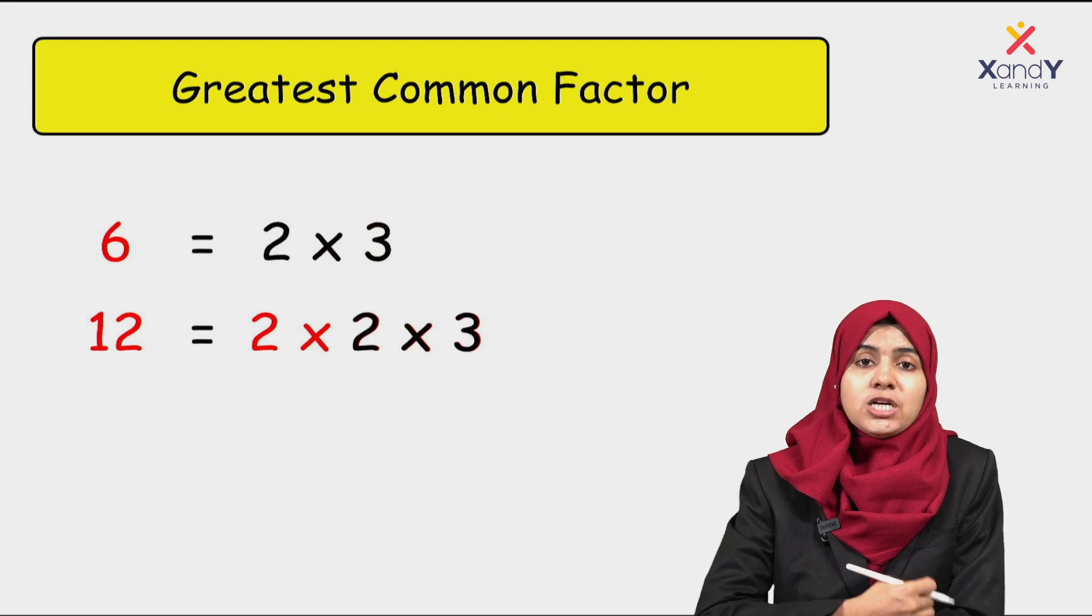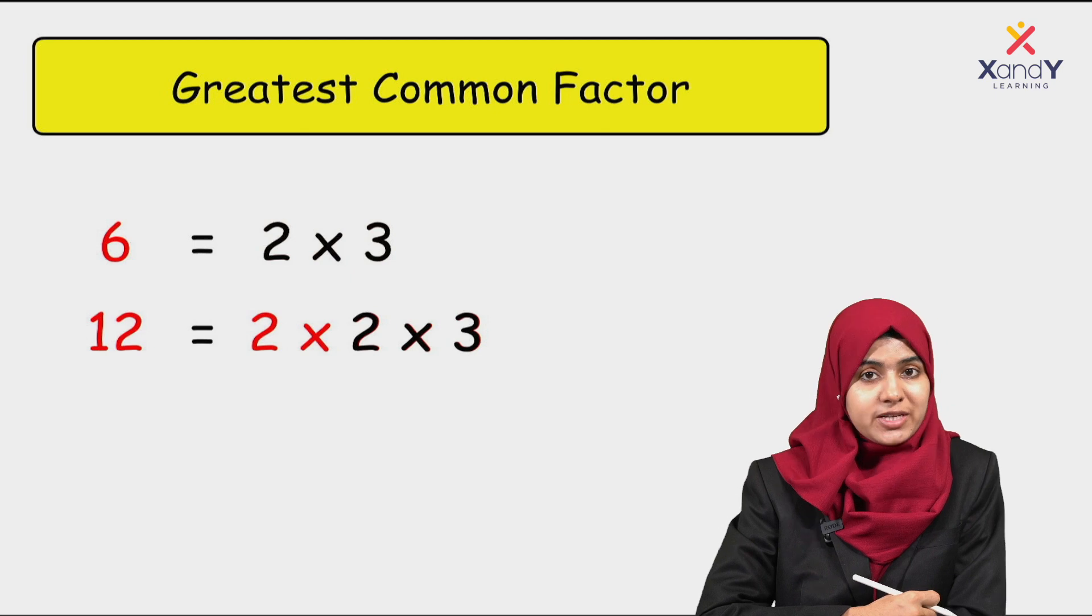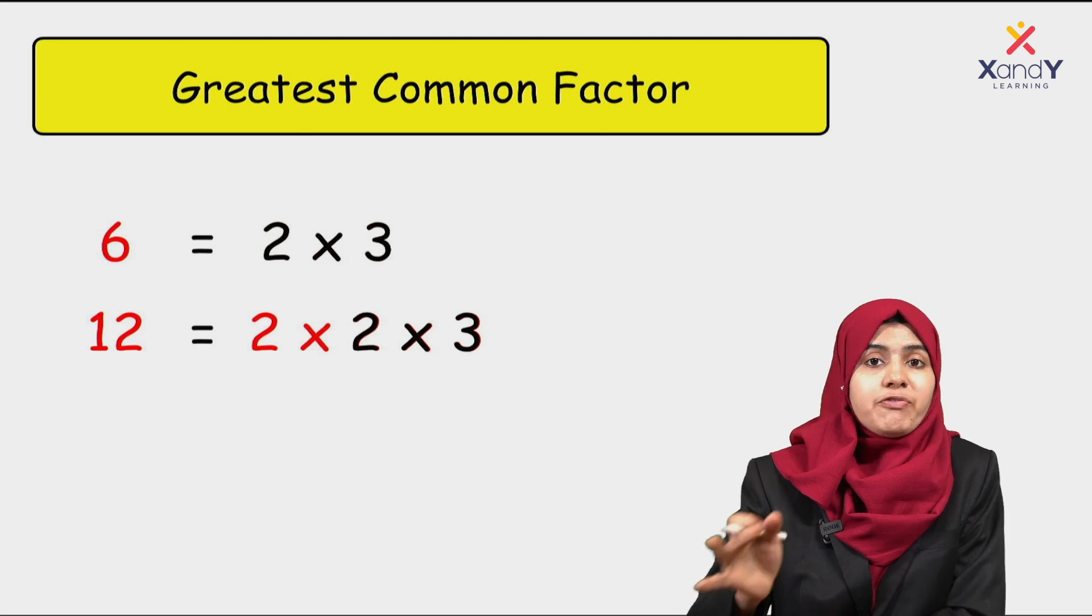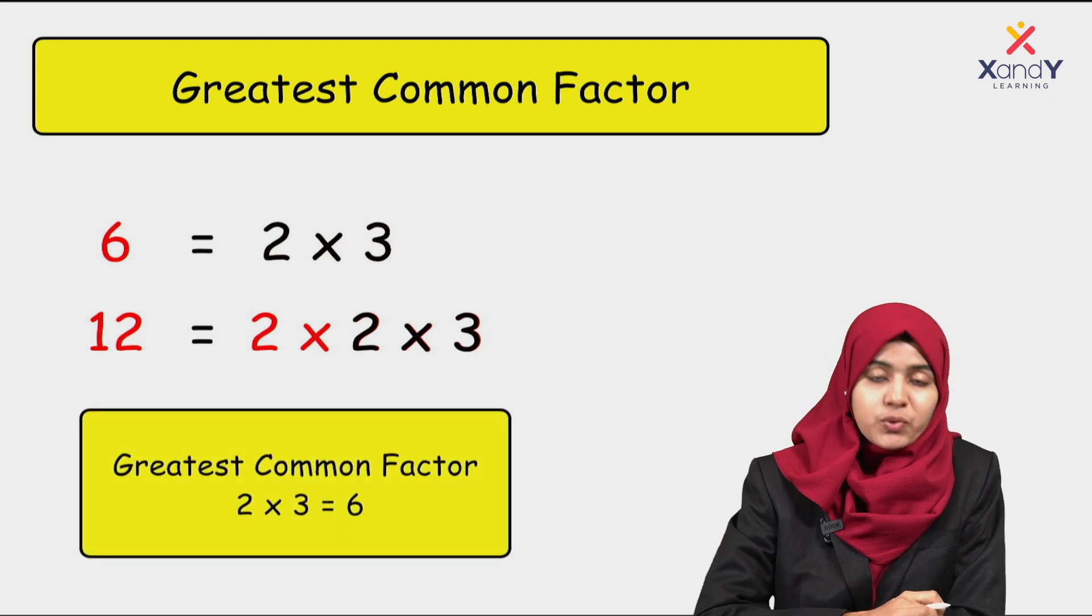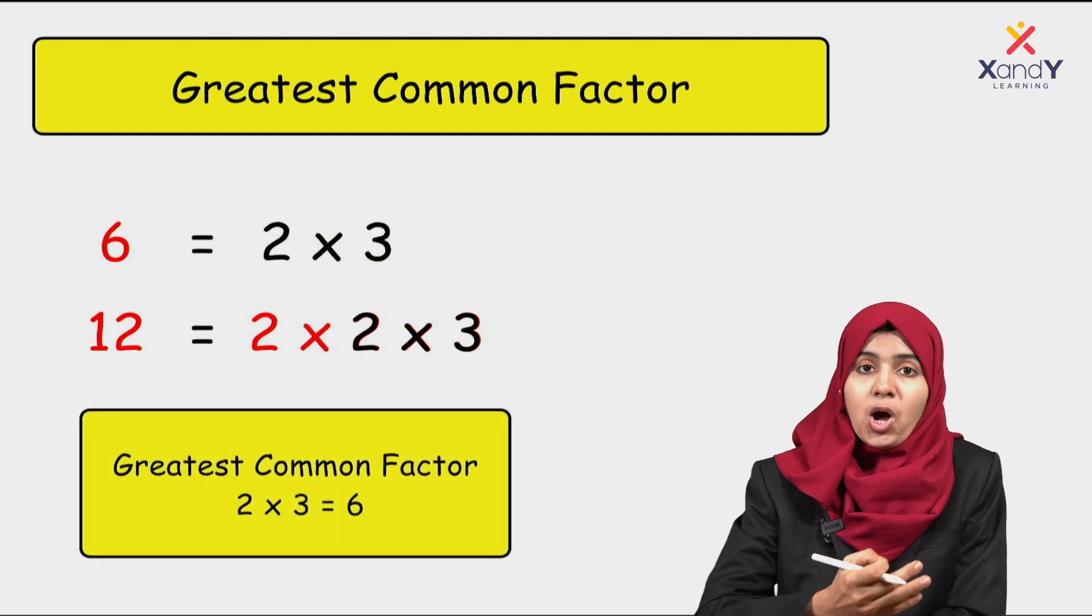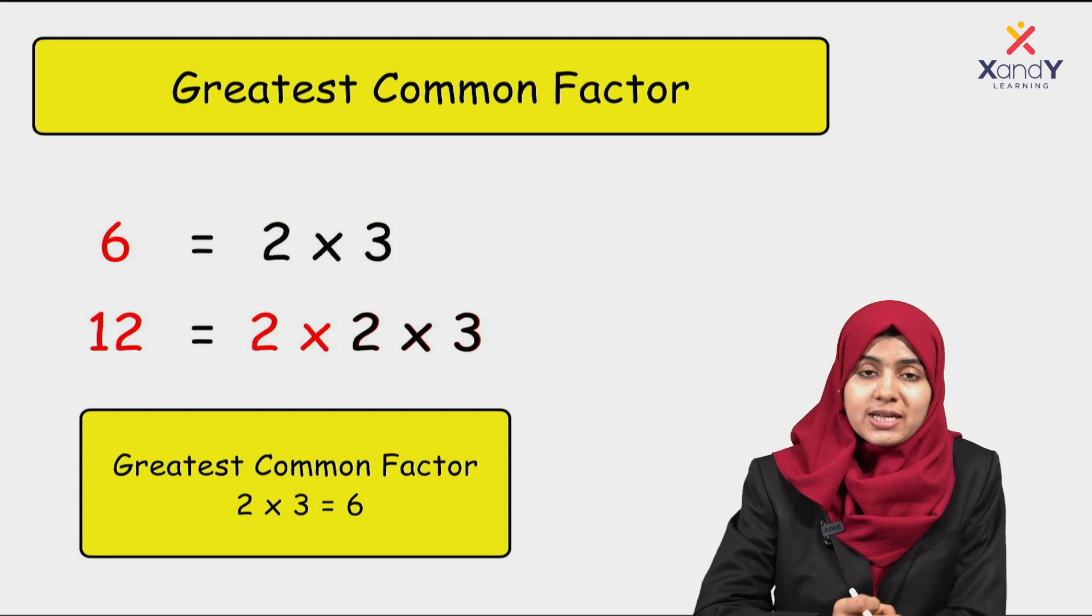The common factors of 6 and 12 are 2 times 3, which equals 6. So the greatest common factor is 6.